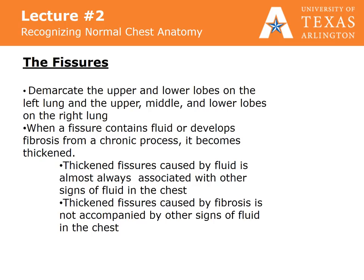The fissures demarcate the upper and lower lobes on the left lung and the upper, middle, and lower lobes on the right lung. When a fissure contains fluid or develops fibrosis from a chronic process, it becomes thickened. Thickened fissures caused by fluid are almost always associated with other signs of fluid in the chest. Thickened fissures caused by fibrosis are not accompanied by other signs of fluid in the chest.